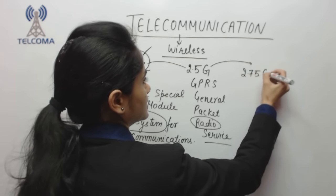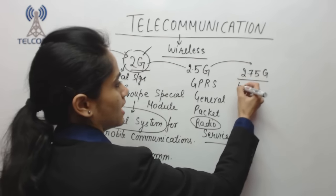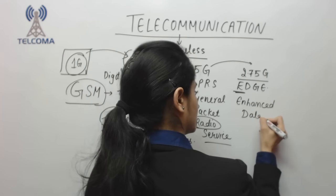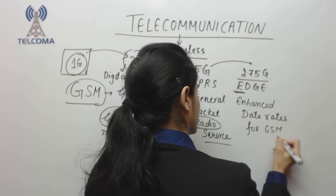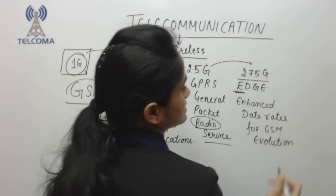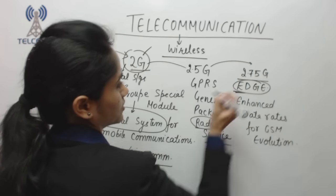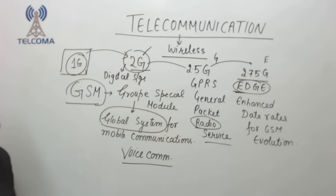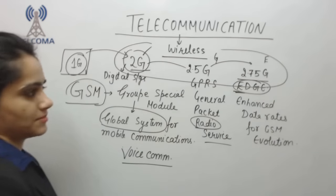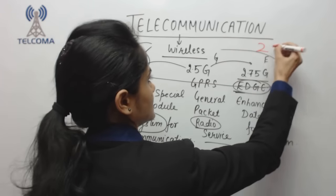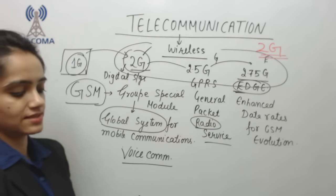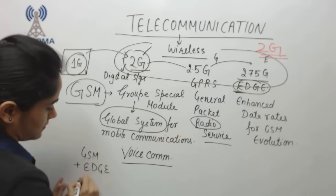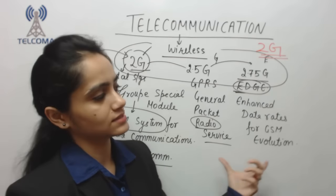So we have 2.75G, called EDGE, where E stands for Enhanced Data Rate for GSM Evolution. That means we increased the data rate beyond GPRS. When we access GPRS on a mobile device, we see the letter G; when we access EDGE, we see the letter E. Combining 2G, 2.5G, and 2.75G, these all fall under the second generation. In our handsets today, GSM handles voice and EDGE handles data — these are the technologies under 2G.